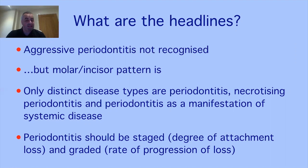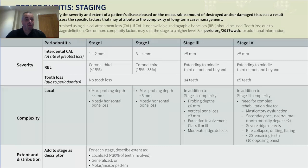For periodontitis, we should talk about staging and grading. Staging looks at how much damage has been done — essentially the same as mild, moderate, or severe. Grading looks at how fast the disease is progressing — effectively what we used to do with chronic versus aggressive periodontitis. These things are massively different concepts, but it's about learning the terminology and applying the rules to arrive at your diagnostic statement.